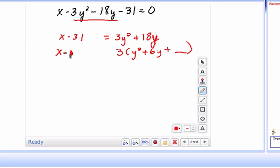So x minus 31 plus blank equals this. We take half of our 6 and then we square that number and that's going to give us 9. Now remember I'm not adding a 9 over here, I'm adding a 3 times 9, so I want to add whatever 3 times 9 is over here, which is 27.